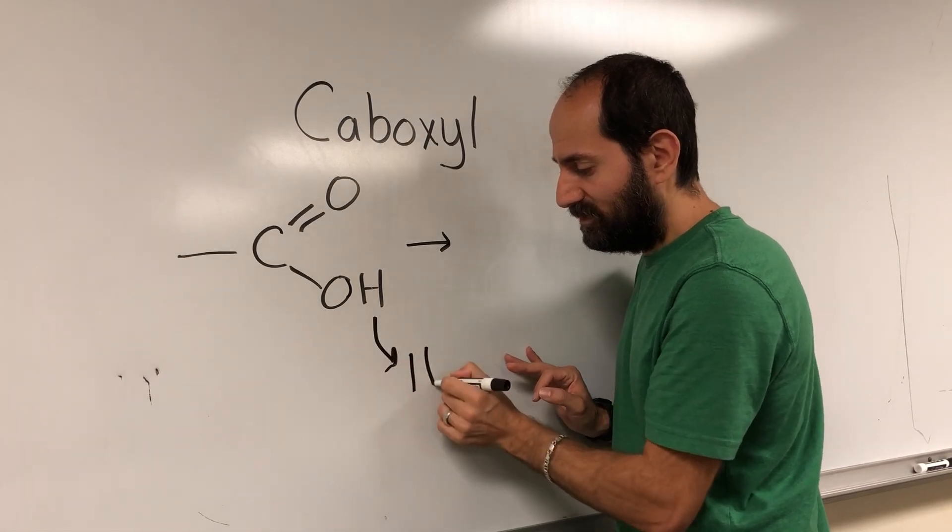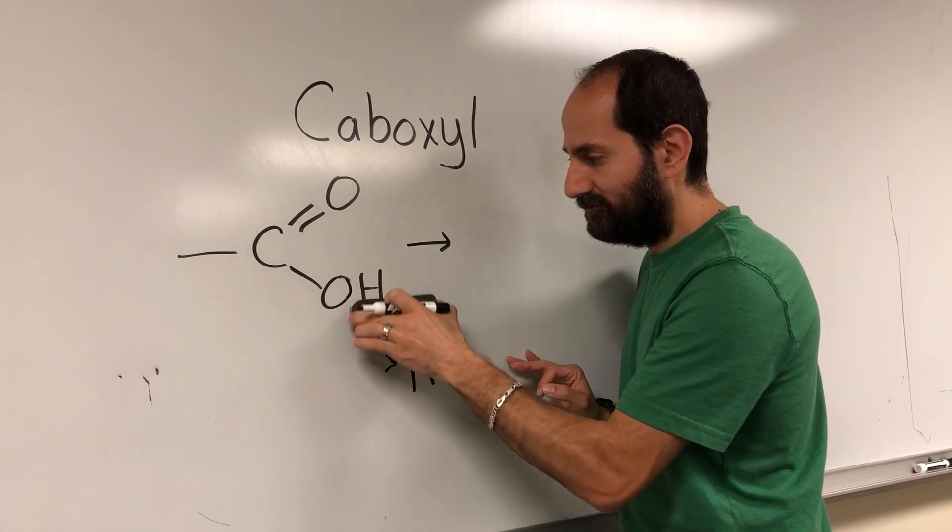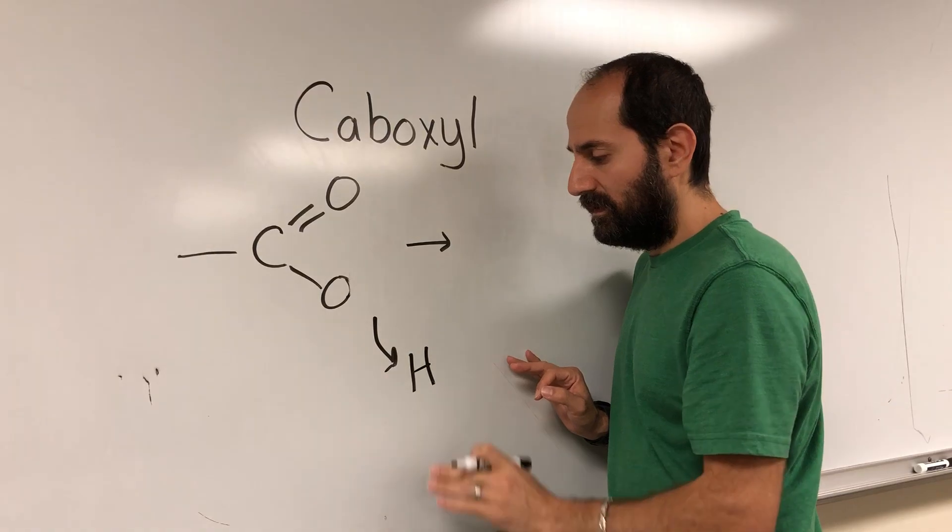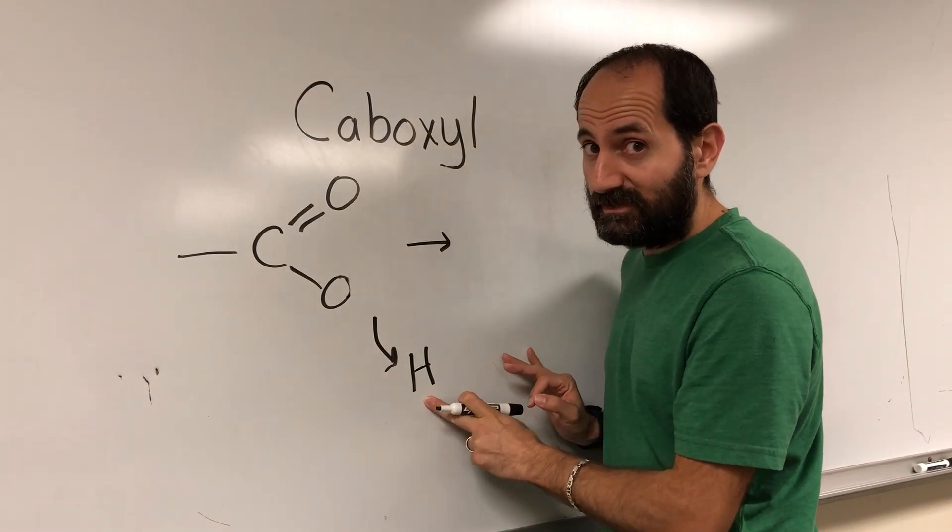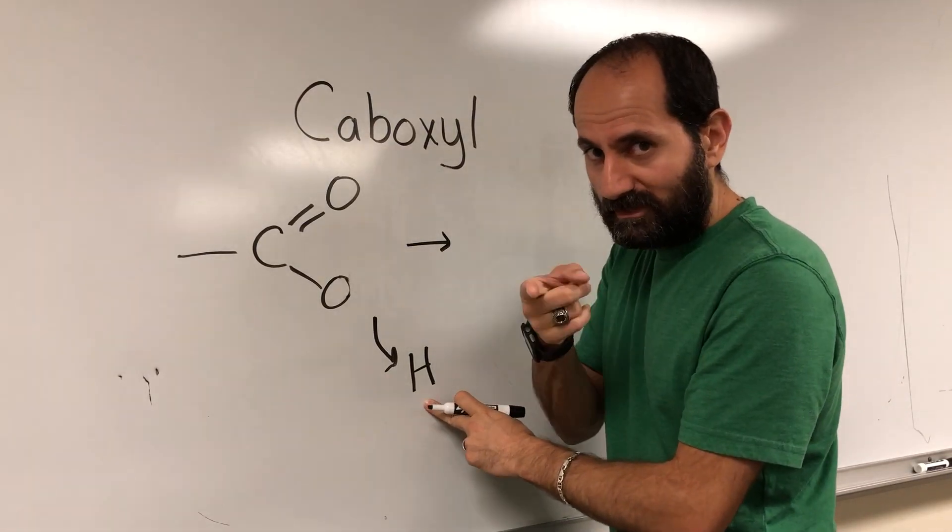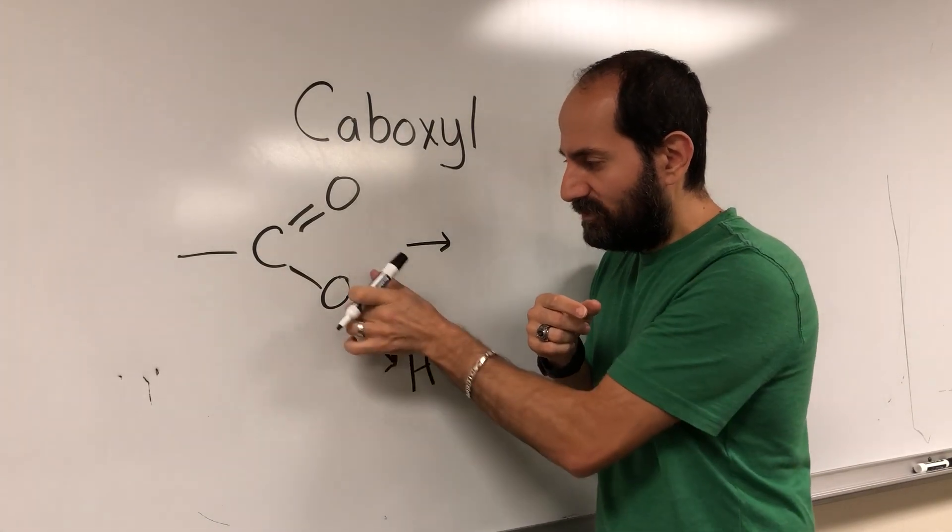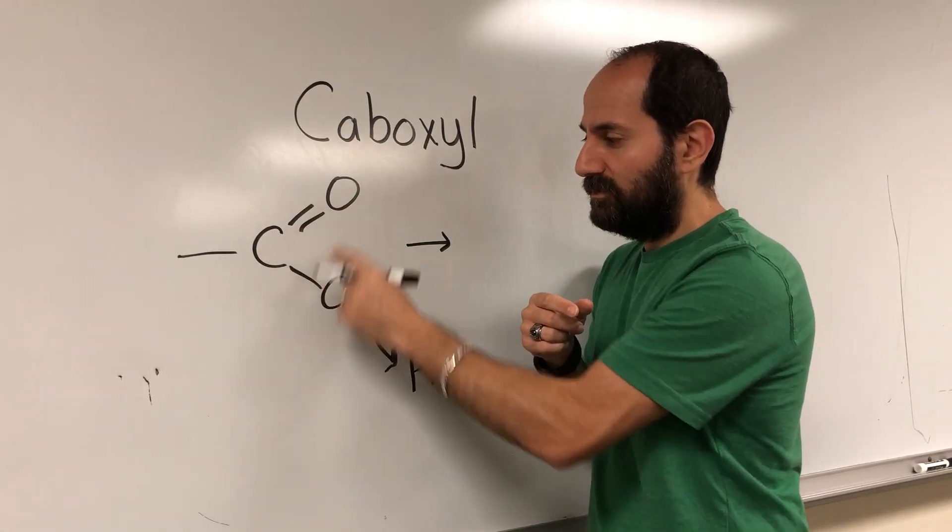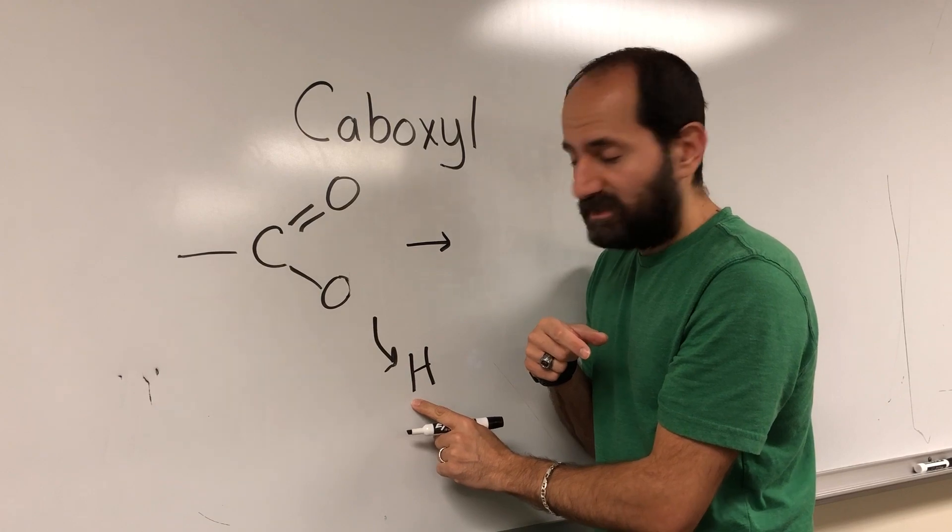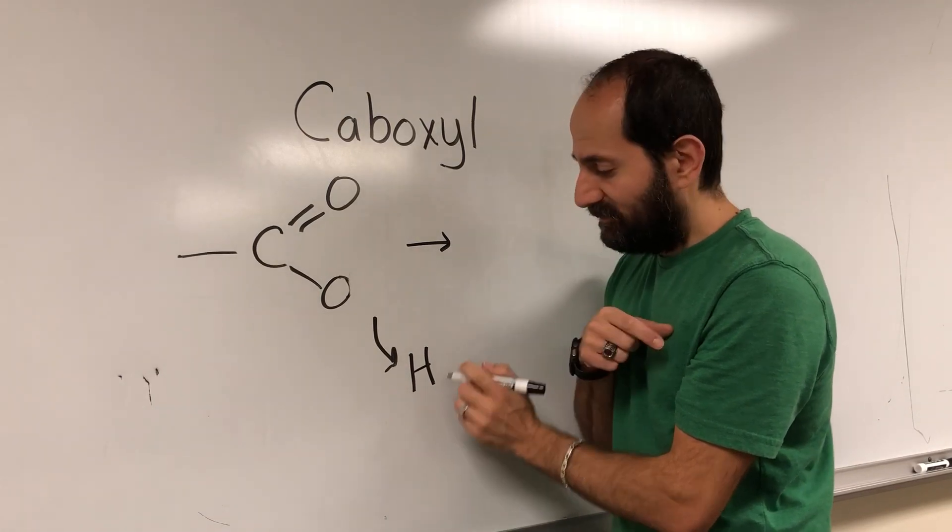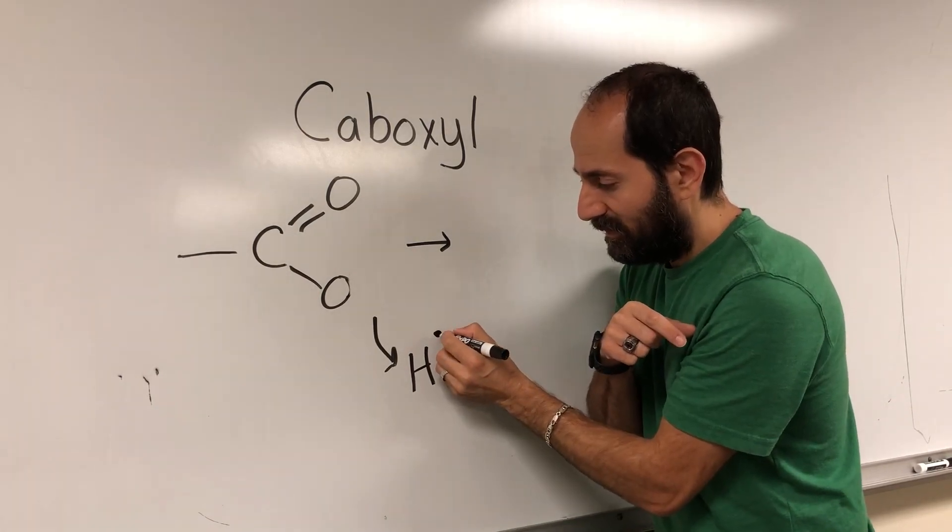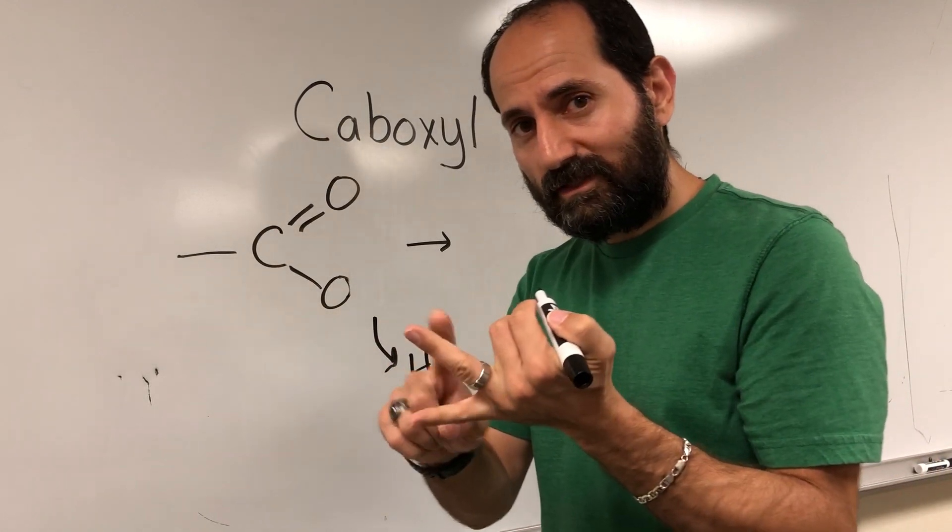You know what it's going to do? This hydrogen here is going to leave. Imagine if hydrogen left. But the whole hydrogen doesn't leave—that's the tricky part. If hydrogen left, you would have C with two O's here and an H leaves, right?